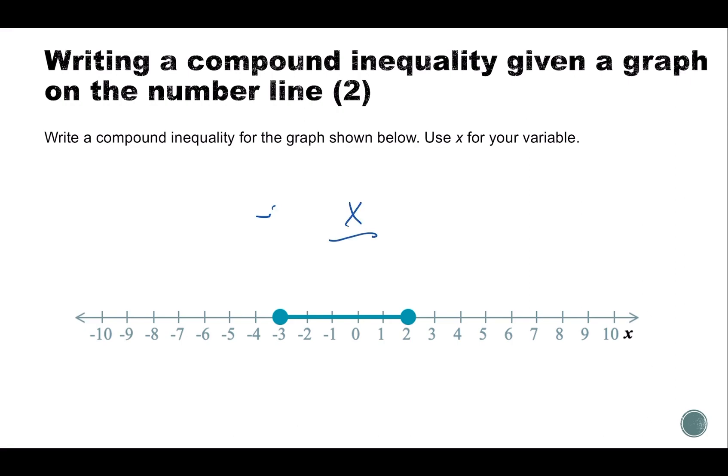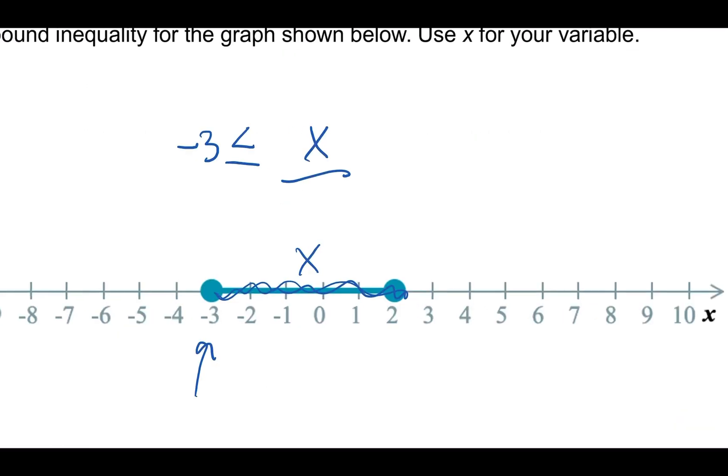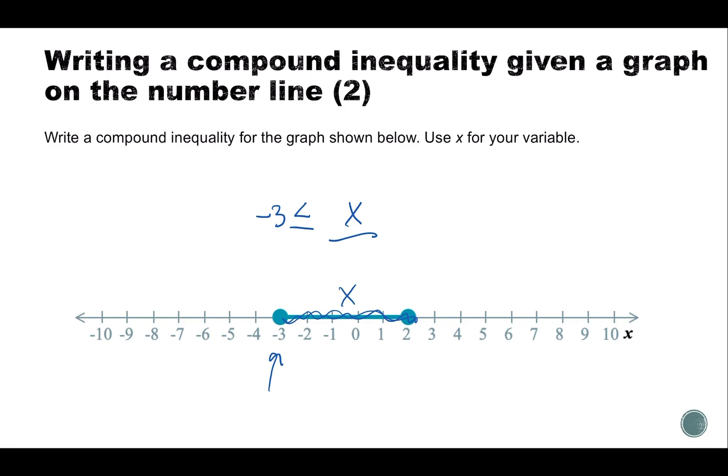So I have negative three. Here are all my x's - all my solutions are in here. Negative three is less than or equal to x because it's below and it's equal to because it's a closed dot. X which is less than or equal to two.